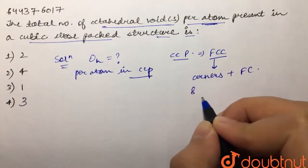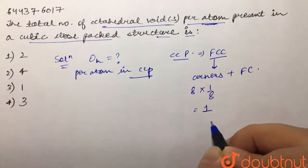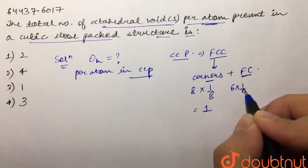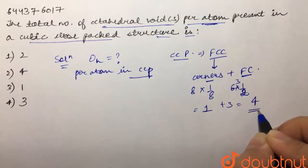We know we have eight corners, and each has a contribution of one by eight, so we have one atom for the corner. And then if you talk about face center, we have six face centers, each has a contribution of one by two, we have three for this. So we have total of four atoms in each unit cell in case of CCP.